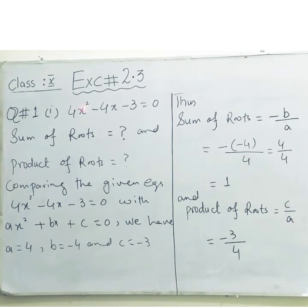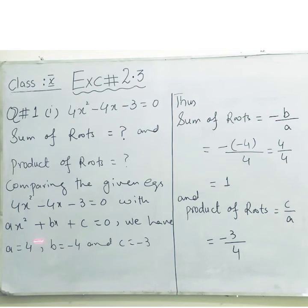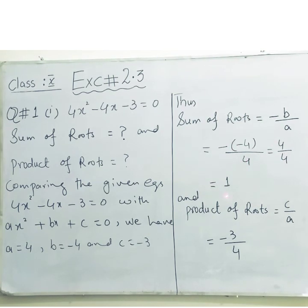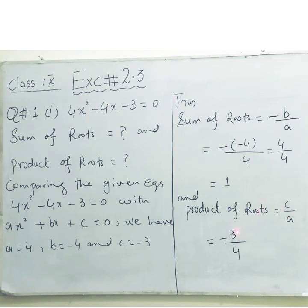We compare 4x² - 4x - 3 = 0 with the general form ax² + bx + c = 0. So we have a = 4, b = -4, and c = -3. Sum of roots = -b/a = -(-4)/4 = 4/4 = 1. Thus the sum of roots is equal to 1. Product of roots = c/a = -3/4. So the product of roots is -3/4, which is the required answer.